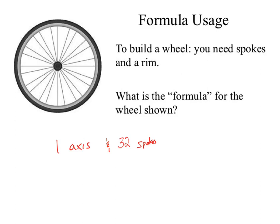So 32 spokes. What else do we need? The distance between the axis and the edge — a rim is going to define that. We need one rim. We also need one tire, and the tube inside the tire. So we need all of those parts. If I take all of those parts, what can I make? One wheel.